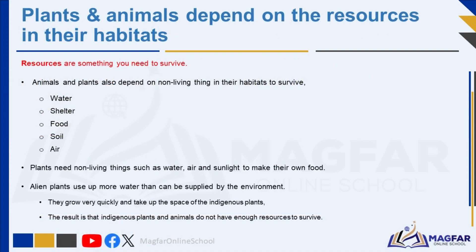Plants and animals also depend on the resources available in their own habitats. Resources are something you need to survive. Animals and plants depend on non-living things in their habitats to survive. These resources include water, shelter, food, soil, and air.